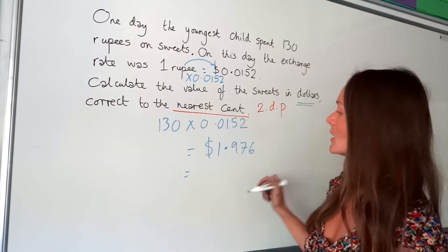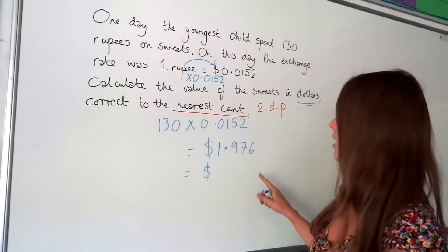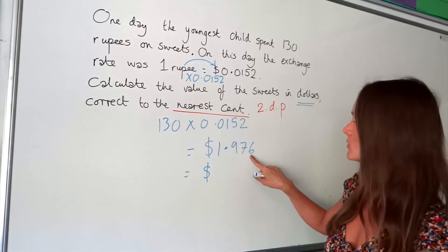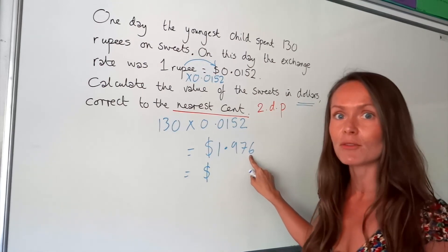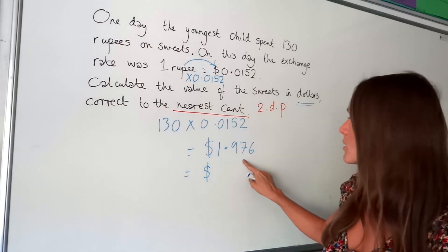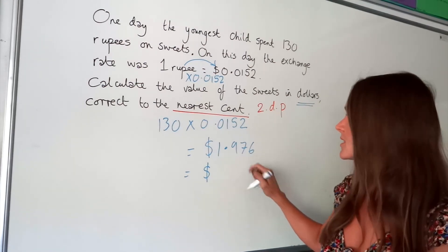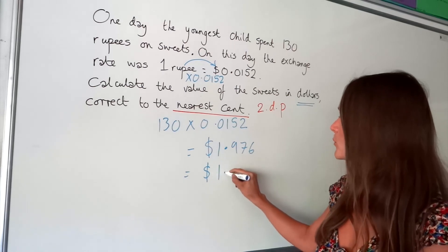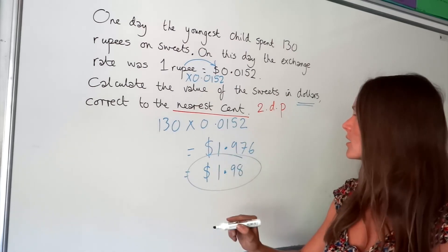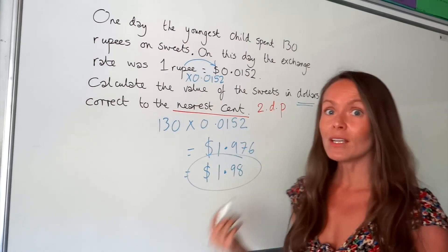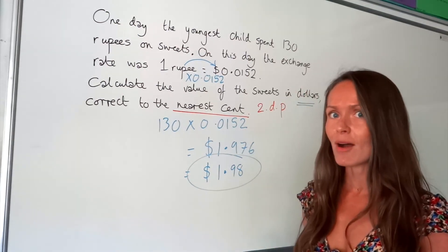Rounding to the nearest cent means rounding to two decimal places — two numbers after the decimal point. To do that I check the third number after the decimal, and because it is 6 — bigger than five — it rounds the seven up by one to eight. So I'm left with $1.98. That's the final answer, and you need to round correctly in this question to get full marks.